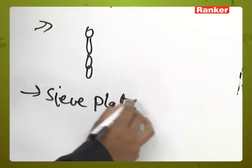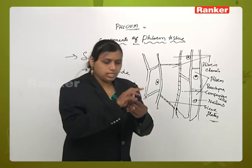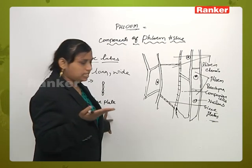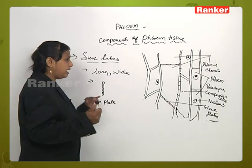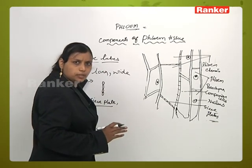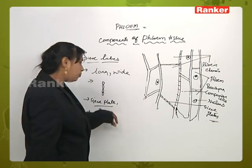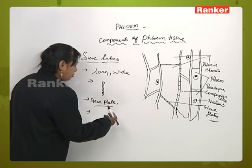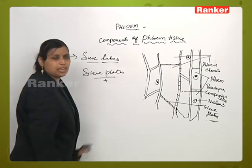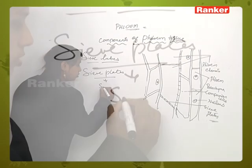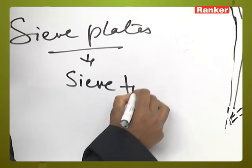Here we come across the concept of sieve plates. One sieve tube is connected with another sieve tube, and the connecting cells are joined because of the presence of protoplasm occurring in the form of plate-like structures — those are called sieve plates. In the transverse end walls, we can see the clear occurrence of sieve plates. These are occurring one above the other and may occur in transverse or oblique forms. This type of sieve plate arrangement is seen in the majority of sieve tubes.